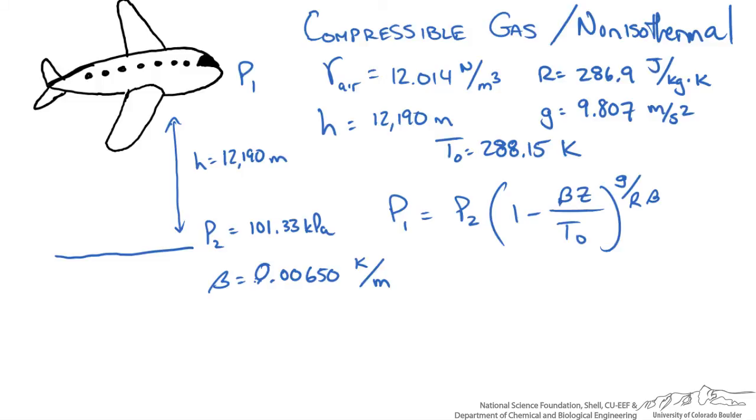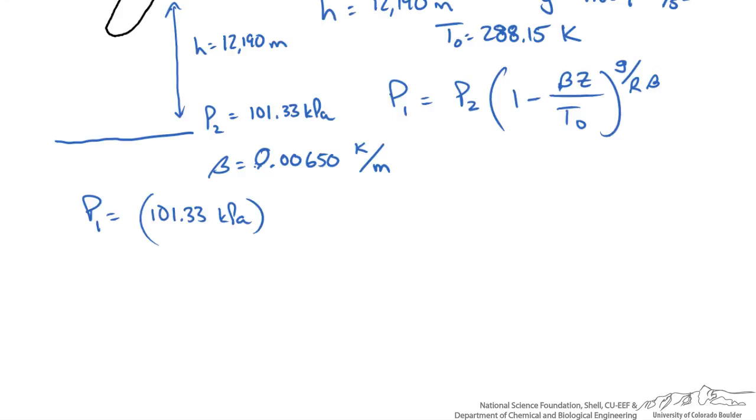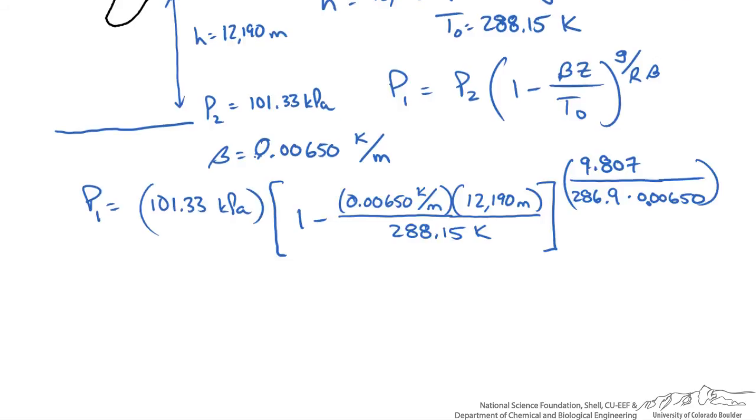So again I will plug in some numbers for our equation. And when I solve this I get our pressure at 40,000 feet or 12,190 meters as 18.67 kPa.